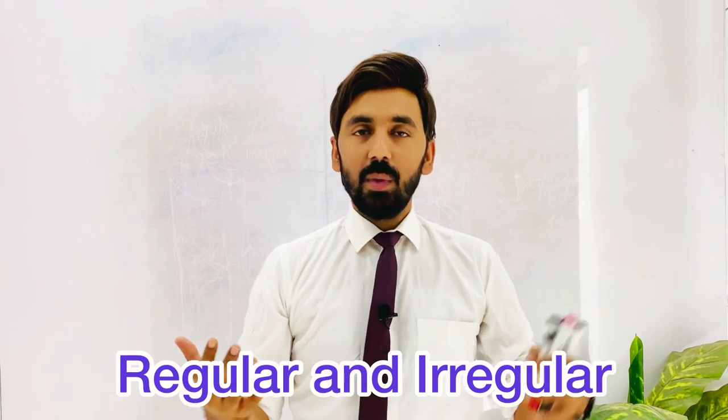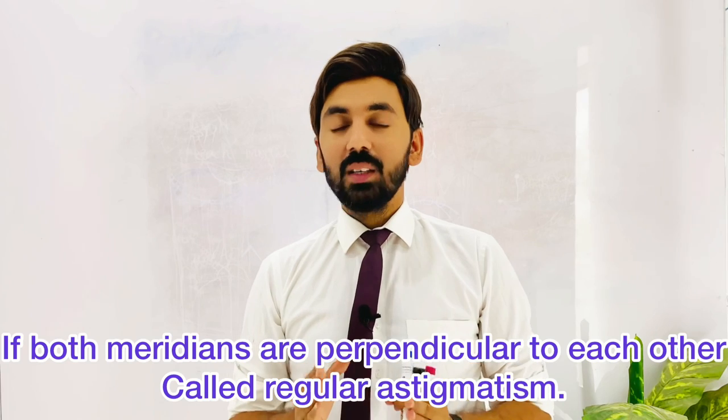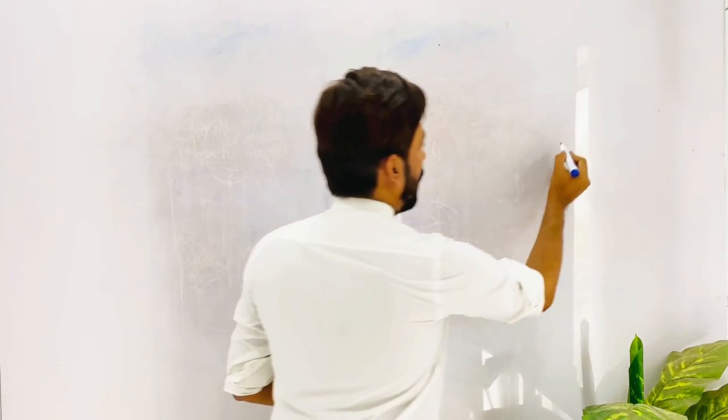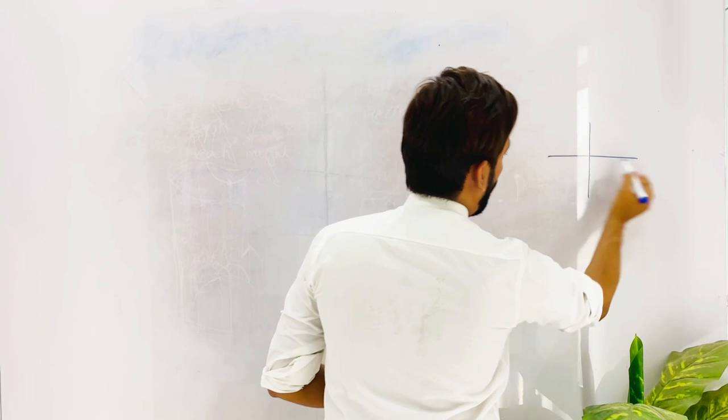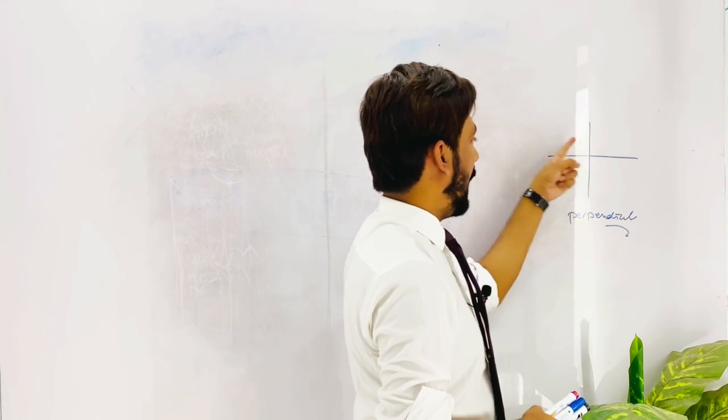Now we will discuss regular and irregular astigmatism. In any case of astigmatism, we have different principal meridians — one is the axis meridian and another is the power meridian. In regular astigmatism, both principal meridians are perpendicular to each other, meaning the angle between them is 90 degrees. For example, one meridian is at 90 degrees and the other is at 180 degrees.